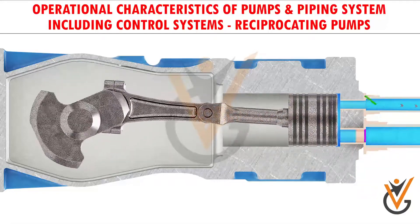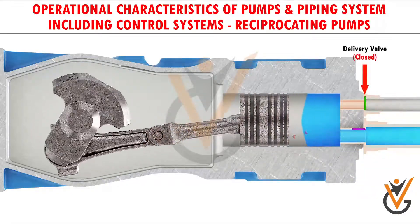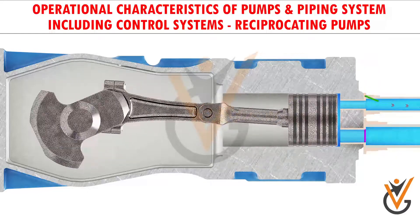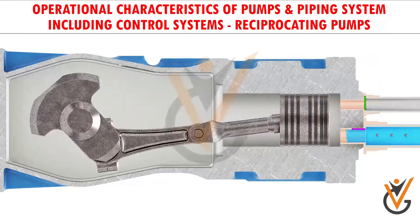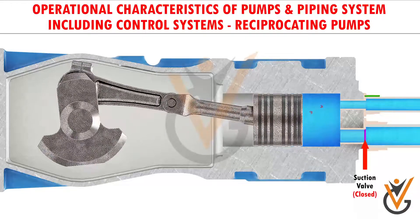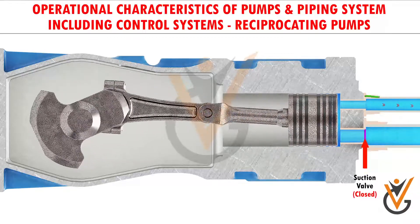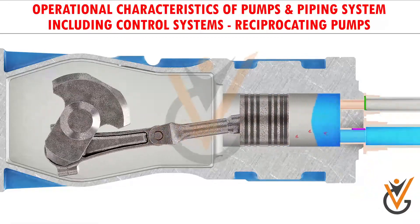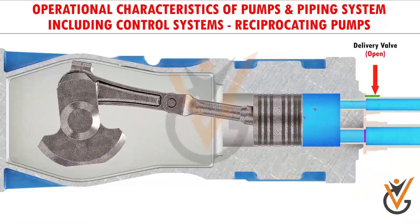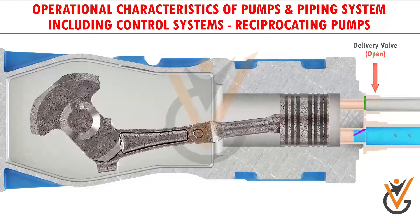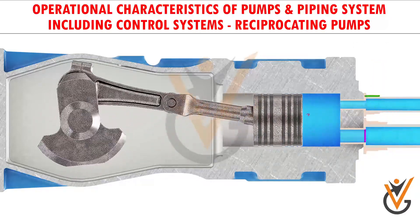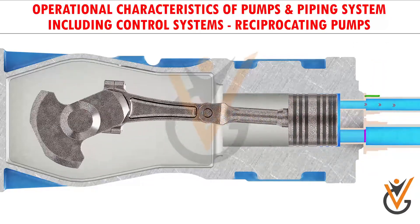During this time, the delivery valve remains closed. As the piston starts moving towards the left, the suction valve closes and the delivery valve opens. Due to the pushing action of the piston, the water goes out from the discharge valve to the delivery side. This is how the single acting reciprocating pump works.